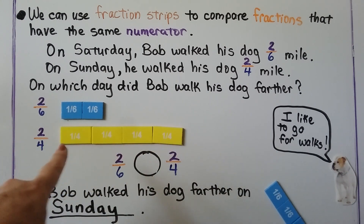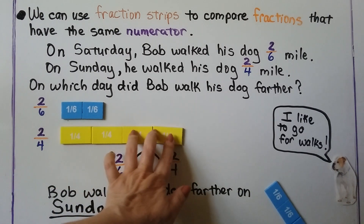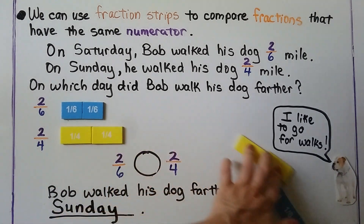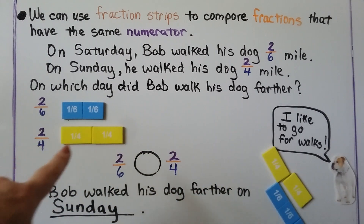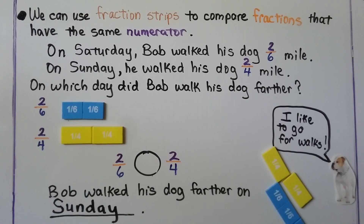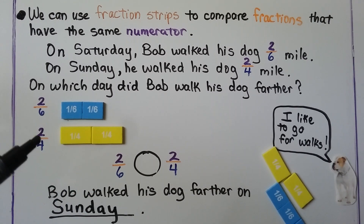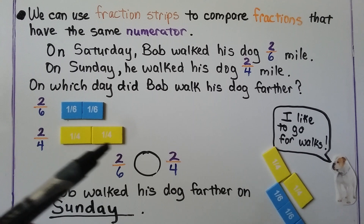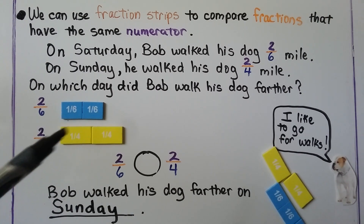We need two-fourths, so let's take two of them away. That means on Sunday he walked this distance. We can see that two-fourths is a much further distance than two-sixths.